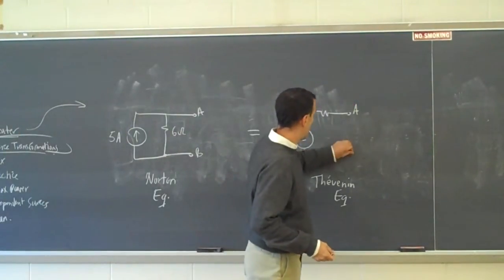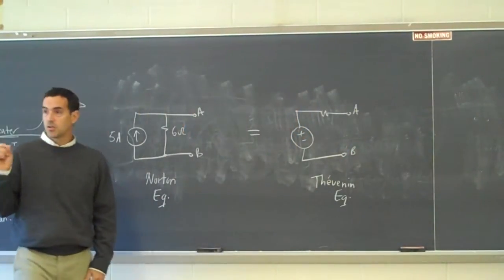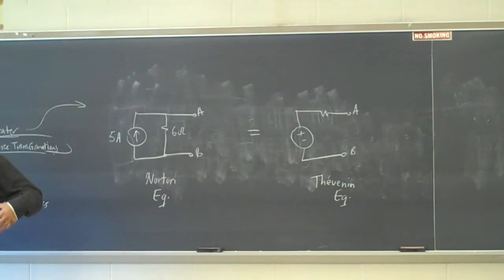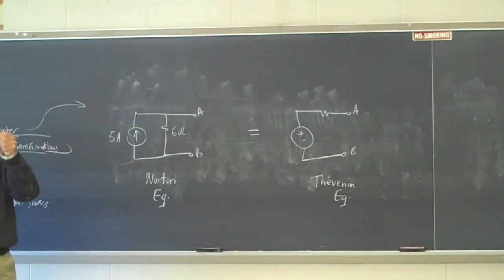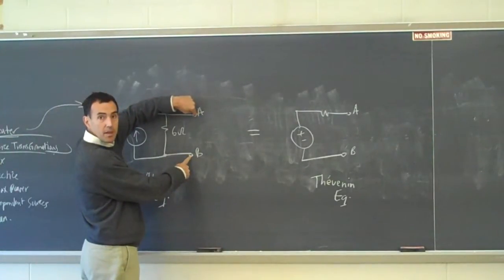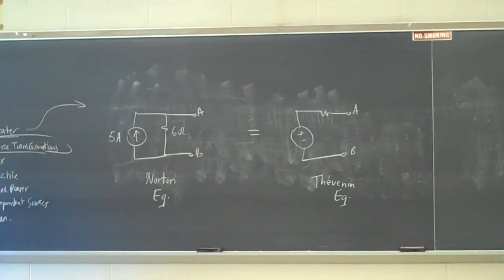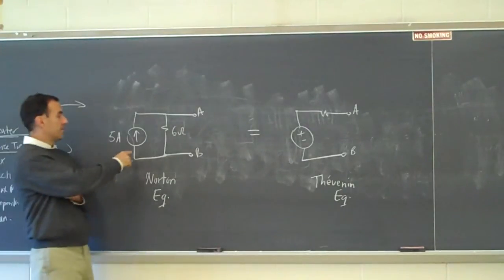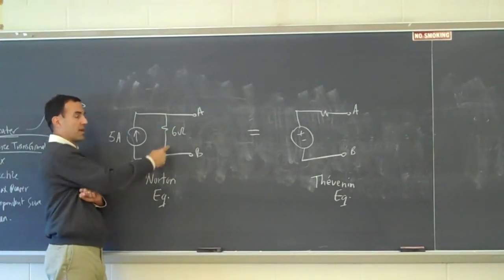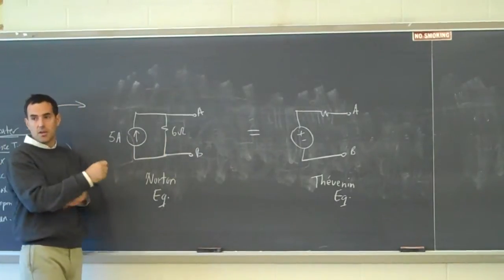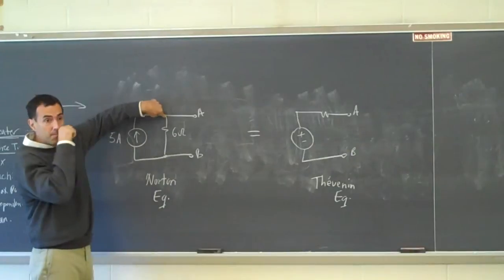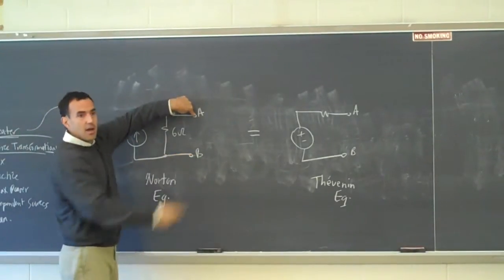These are the same points A and B. I need to make sure these two circuits behave exactly the same. One measurement I'm going to make: I'll take two probes of a voltmeter and measure the voltage between A and B. If I measure the voltage drop between A and B for the circuit on the left, how much voltage will I measure? The answer is 30 volts — because this 5 amps has nowhere to go but through that 6-ohm resistor. So I'll have 5 amps flowing through the 6-ohm resistor, giving a 30-volt drop across it. When I measure between A and B, I get 30 volts.